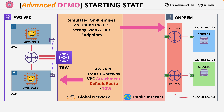This network also has two other subnets, each containing an on-premises server. It's important at this stage that you understand that while the on-premises environment is running inside AWS, conceptually you need to ignore that fact. All of the steps in this advanced demo work equally well when the on-premises environment is truly on-premises. I've designed this mini-project to be realistic to the kind of scenarios you're going to experience in the real world.